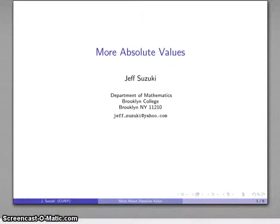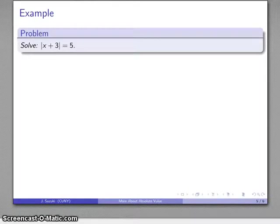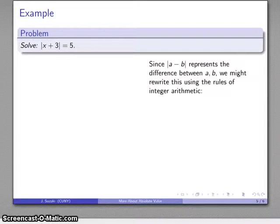All right, well what about some other equations that involve absolute values? For example, x plus 3 absolute value is equal to 5. And one problem we may run into is I know how to interpret the absolute value of a minus b, and I don't have a way of interpreting the absolute value of a plus b.